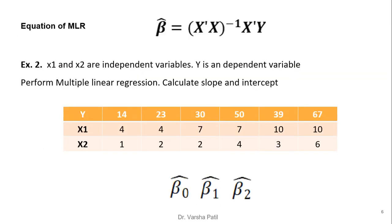Now let us start with the second problem. Here again x1 and x2 are independent variables, y is the dependent variable, and there are 6 total records. We require to calculate the slope and intercept, that is beta 1, beta 2, and beta 0 respectively.